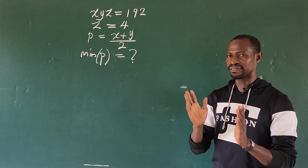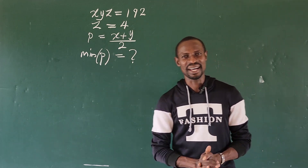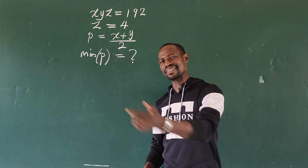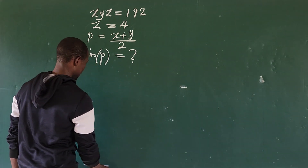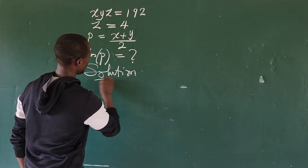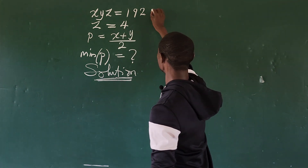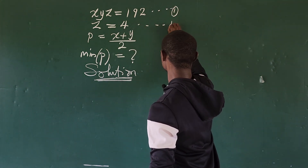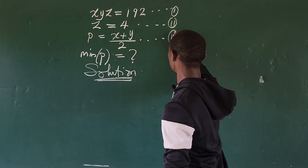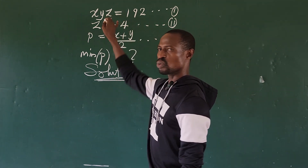So how do we go about this? Let's go into today's challenge. We take our solution. Let's take the first equation as equation one, this as equation two, and this as equation three.